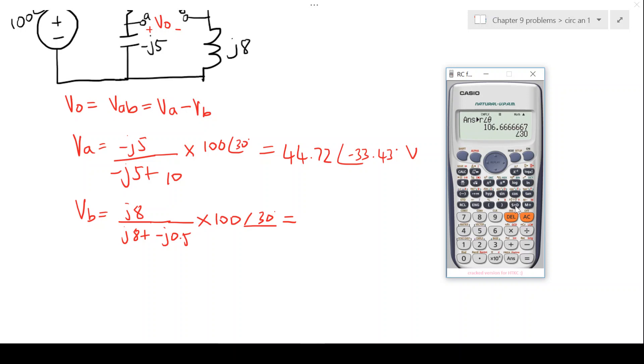This gives us a value of, let's double check this again, it seems to be larger than the magnitude, which shouldn't be the case. So we should be at 8i over 8i minus 0.5i, multiply this by 100 angle 30.